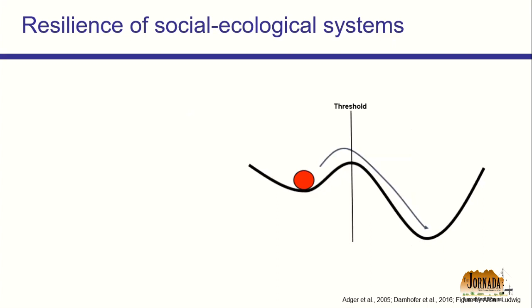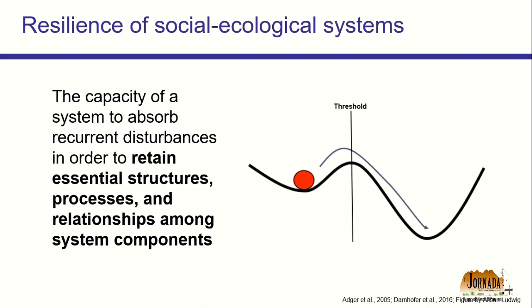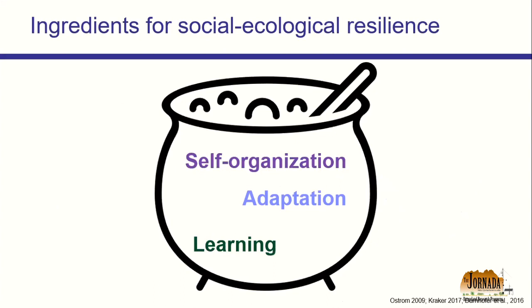Resilience is a really important concept when thinking about social ecological systems, especially as we're dealing with so much ecological, social, and economic change on those different scales that we manage. When folks talk about resilience of a social ecological system, they're talking about its capacity to absorb major disturbances in order to retain its essential structure, process, and relationships among system components — the ability of a system to withstand shock and remain relatively the same in ways that people care about.